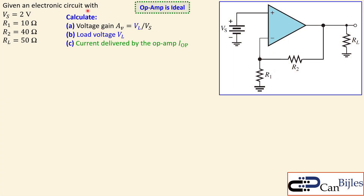Let's look at our example. We have the following electronic circuit — an ideal op-amp as shown. We have Vs = 2 volts DC, R1 = 10 ohms, R2 = 40 ohms, and a load of 50 ohms. What we want to calculate is the voltage gain from source to load — that is, the load voltage over the source voltage — and also the value of the load voltage itself, and the current delivered by the op-amp.